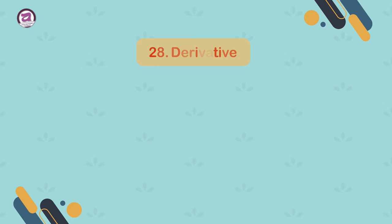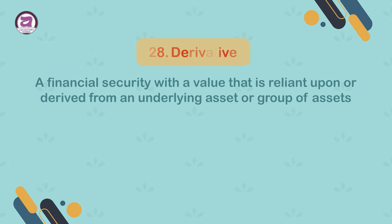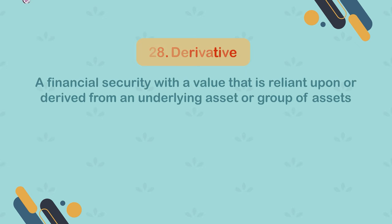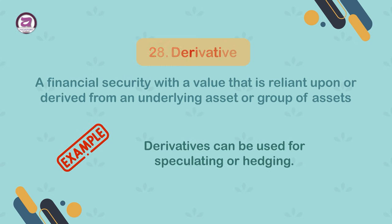28. Derivative. A financial security with a value that is reliant upon or derived from an underlying asset or group of assets. Example: derivatives can be used for speculating or hedging.